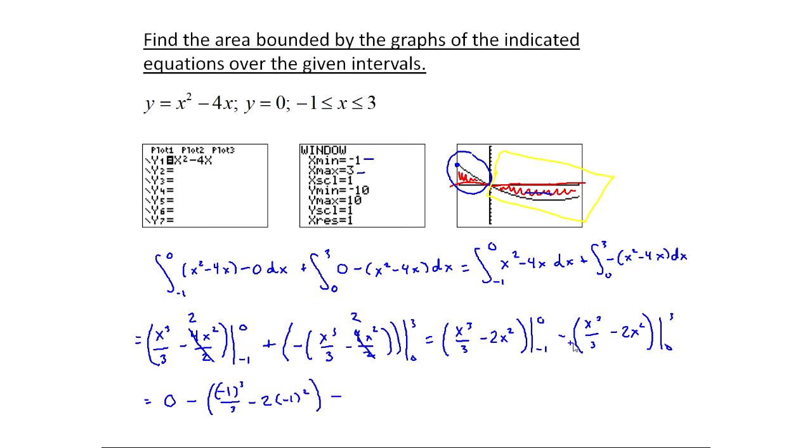And then this is minus, so now I'm here to this piece right here. And I say, okay, I'm going to plug in the three first. So that's three cubed over three minus two times three squared. Now here when I plug in the zero, it's just going to be minus a zero, and that won't change signs or anything. And so when you actually calculate this out, what you should end up with as an exact answer is 34 over three.